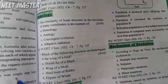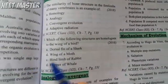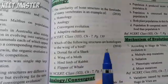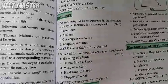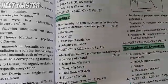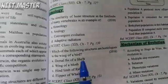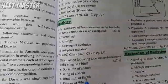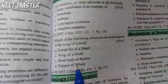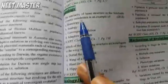Which of the following structures are homologous to the wing of a bird? Options: dorsal fin of a shark; wing of a moth; hind limb of a rabbit; flipper of a whale. The dorsal fin of a shark and wing of a moth are analogous. The flipper of a whale is not homologous to a bird wing.